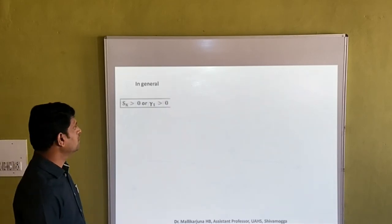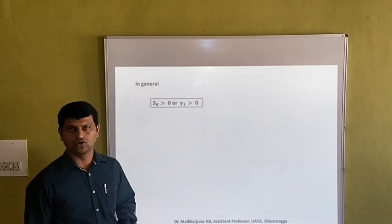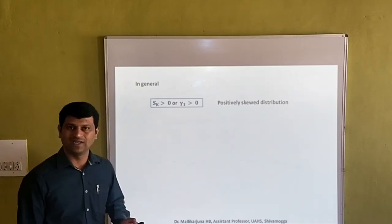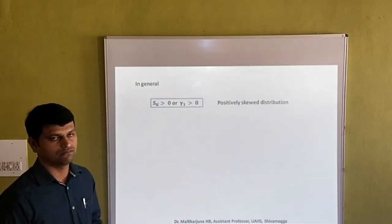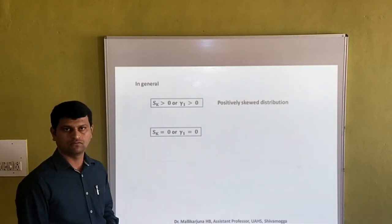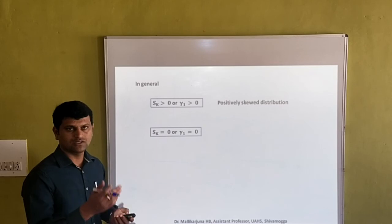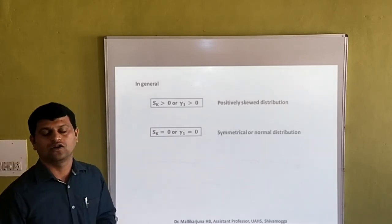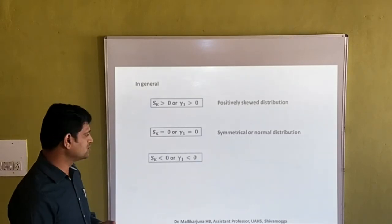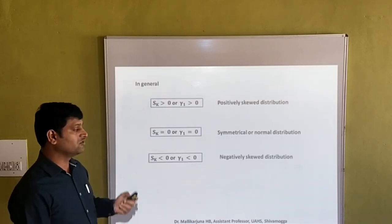In general, if skewness is greater than zero, or gamma one is greater than zero, the distribution is positively skewed. If skewness equals zero, or gamma one equals zero, there is no skewness — this is a symmetrical or normal distribution. If skewness is less than zero, or gamma one is less than zero, the distribution is negatively skewed.